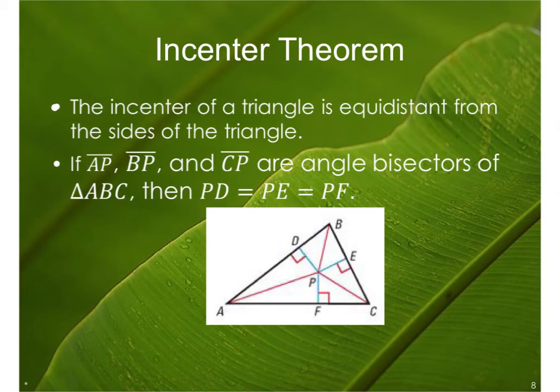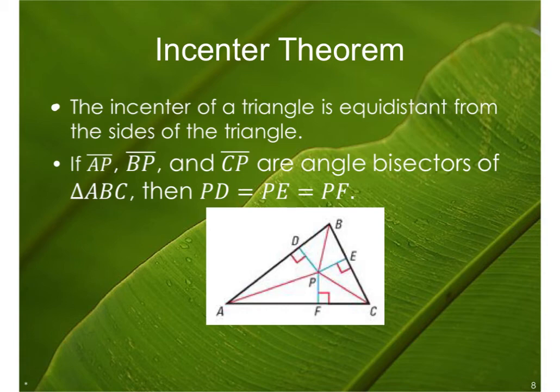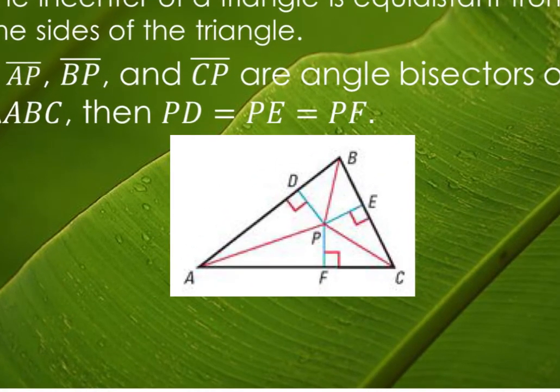Next, we're going to talk about the incenter. The incenter is a little bit different. The incenter of a triangle is equidistant from the sides of the triangle. We're no longer taking the perpendicular bisector — we're taking the angle bisectors and finding where those meet. If AP, BP, and CP are angle bisectors of triangle ABC, then PD, PE, and PF are congruent.